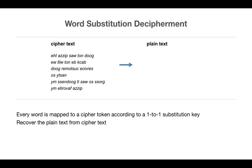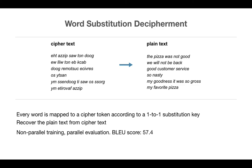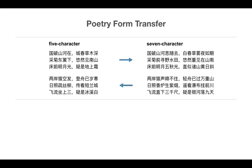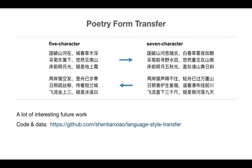Decipherment is another task that calls for non-parallel style transfer. We focus on the decipherment of word substitution ciphers, and our model achieves a BLEU score of 57.4 by evaluating on parallel sentences. Finally, we tried our model to transfer between different poetry forms, Chinese 5-character poetry and 7-character poetry. Please refer to our paper for more details.